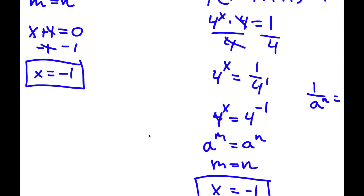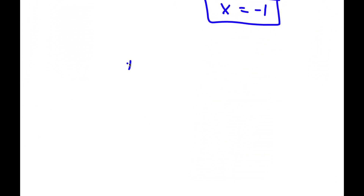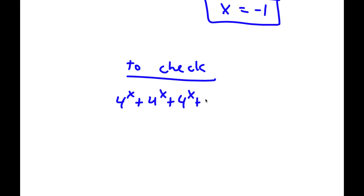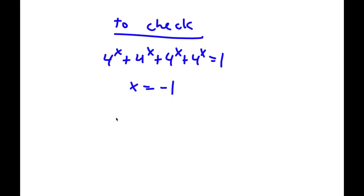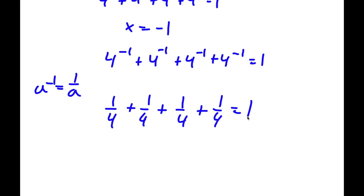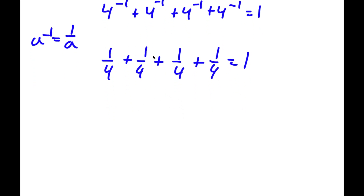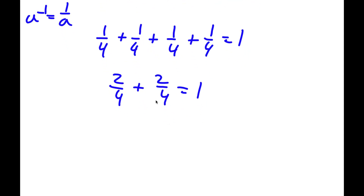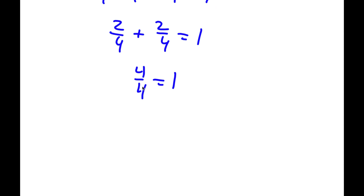So this is another method of solving this problem. Now to check: I have 4 to the power of x plus 4 to the power of x plus 4 to the power of x plus 4 to the power of x is equal to 1, with x equal to negative 1. So now I have 4 to the power of negative 1 four times, and since a to the power of negative 1 equals 1 over a, that gives 1/4 plus 1/4 plus 1/4 plus 1/4. Adding these: 1/4 plus 1/4 is 2/4, plus another 2/4 gives 4/4, and anything divided by itself is 1 — so 1 equals 1, confirming our solution is correct.